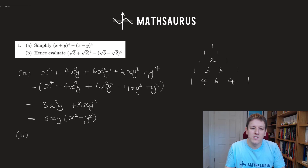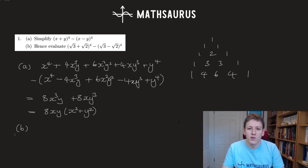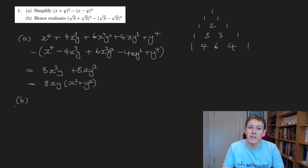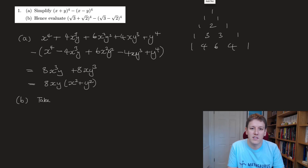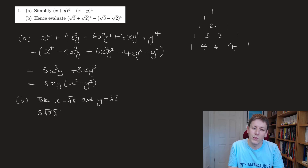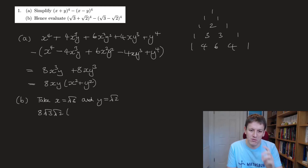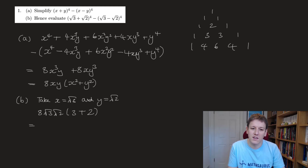In part b, to evaluate (√3 + √2)^4 minus (√3 - √2)^4, all I need to do is take x = √3 and y = √2 and substitute into the previous expansion. So I get 8√3·√2 times (√3)² + (√2)² = 8√6 times (3 + 2) = 40√6.